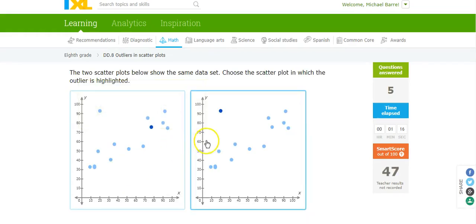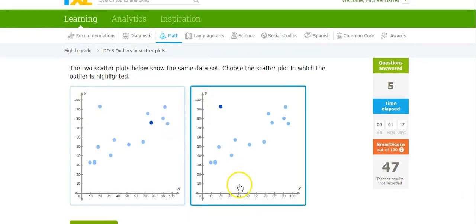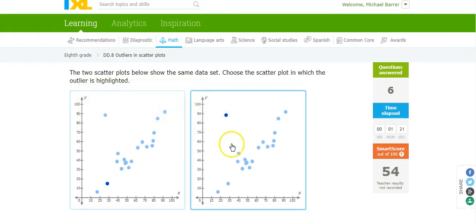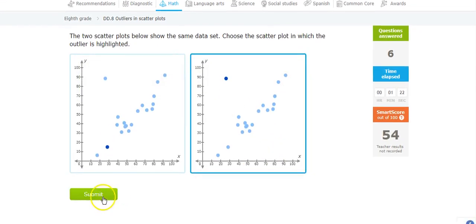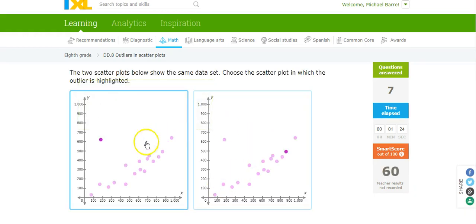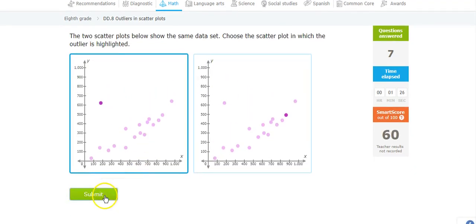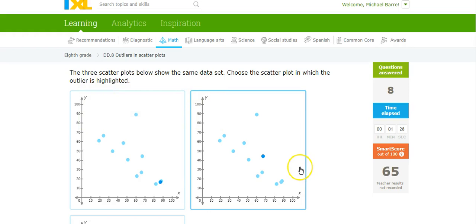So the outlier is always that point that's kind of off by itself, doing its own thing, doesn't fit in with the rest of the data. All right. I think you get it.